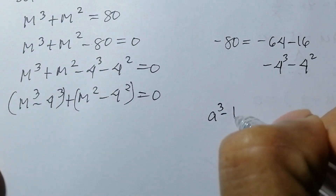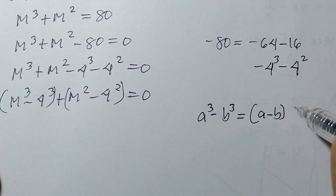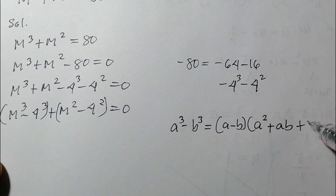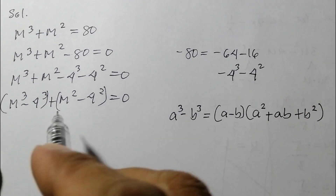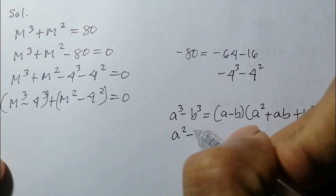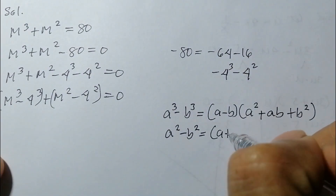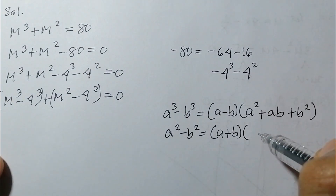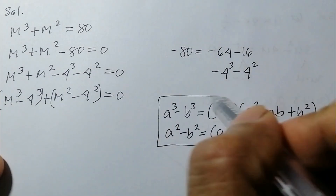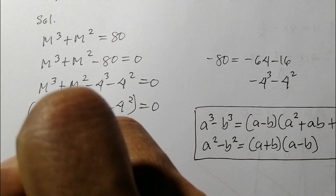We use the formula: a³ minus b³ equals (a minus b)(a² plus ab plus b²). And the difference of two squares: a² minus b² equals (a plus b)(a minus b). We are going to apply these formulas here.